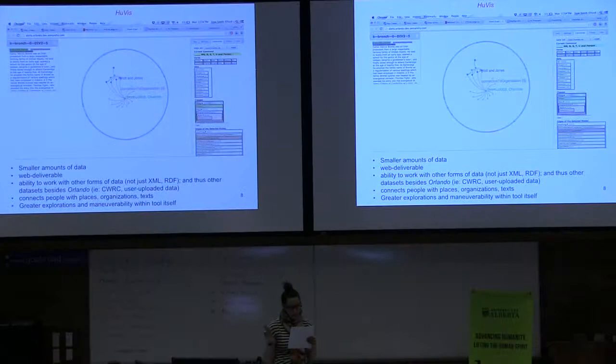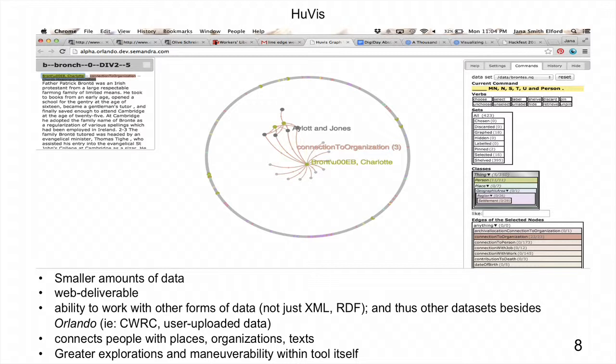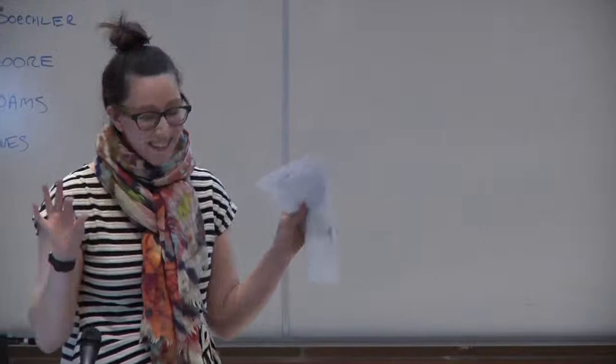Not only can the user drag and drop nodes in or out of the graph, but the side panel dynamically adjusts to what the user does inside the graph. You can also do it the opposite way — you can select from the side pane what items you want to see, and then it will reflect in the graph. If you want to talk to me more about how this has impacted my own research, I'll discuss that in person.